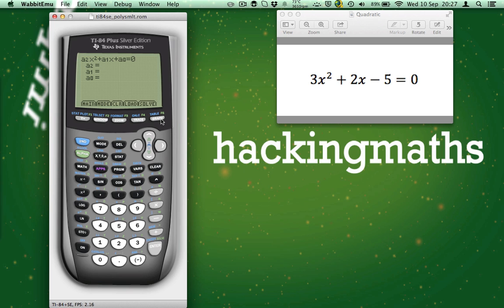We're now presented with a screen where we can enter the coefficients of the equation. The coefficient is just the number in front of the x squared, the x or the number on its own. As you can see, a2 is the number in front of the x squared.